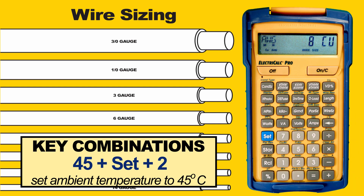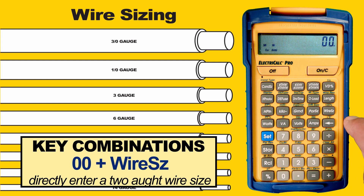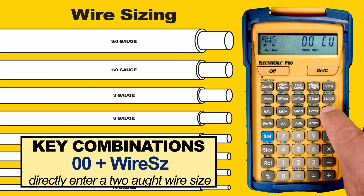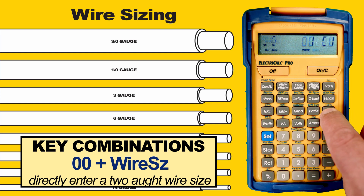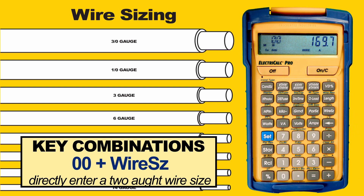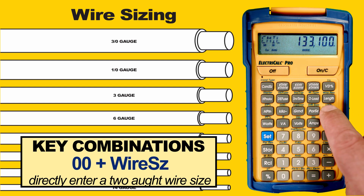We can also enter wire sizes directly. For a 2-ought wire, for example, enter 00 then press Wire Size — you will see the size. Press Wire Size again and you will see the maximum ampacity from the table. Press again for circular mils, and a final press will display the table reference.